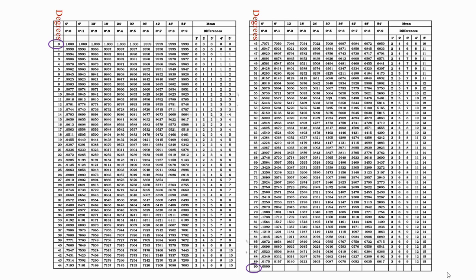After the degree column, there are 10 more columns divided into minutes. It starts from 0 minutes and ends at 54 minutes. Just below the minute row, there is one more row which represents the given minute in degrees. For example, 12 minutes equals 0.2 degree, 18 minutes equals 0.3 degree, and so on — 54 minutes equals 0.9 degree.